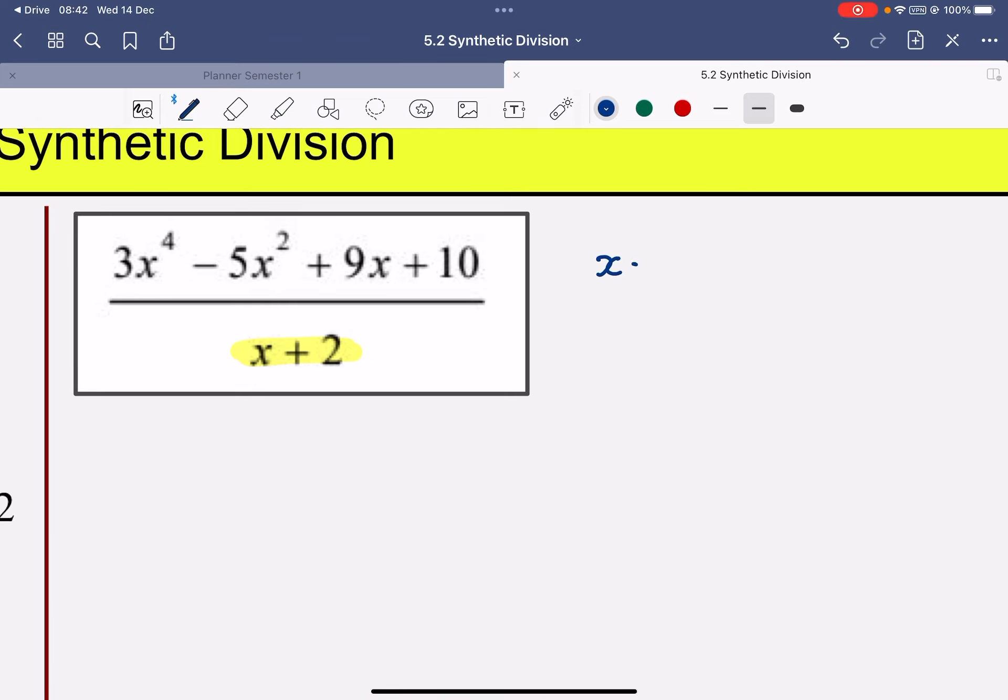What I'm going to do is I'm going to see what the x value is that would give me 0. And obviously in this one, the x is negative 2.